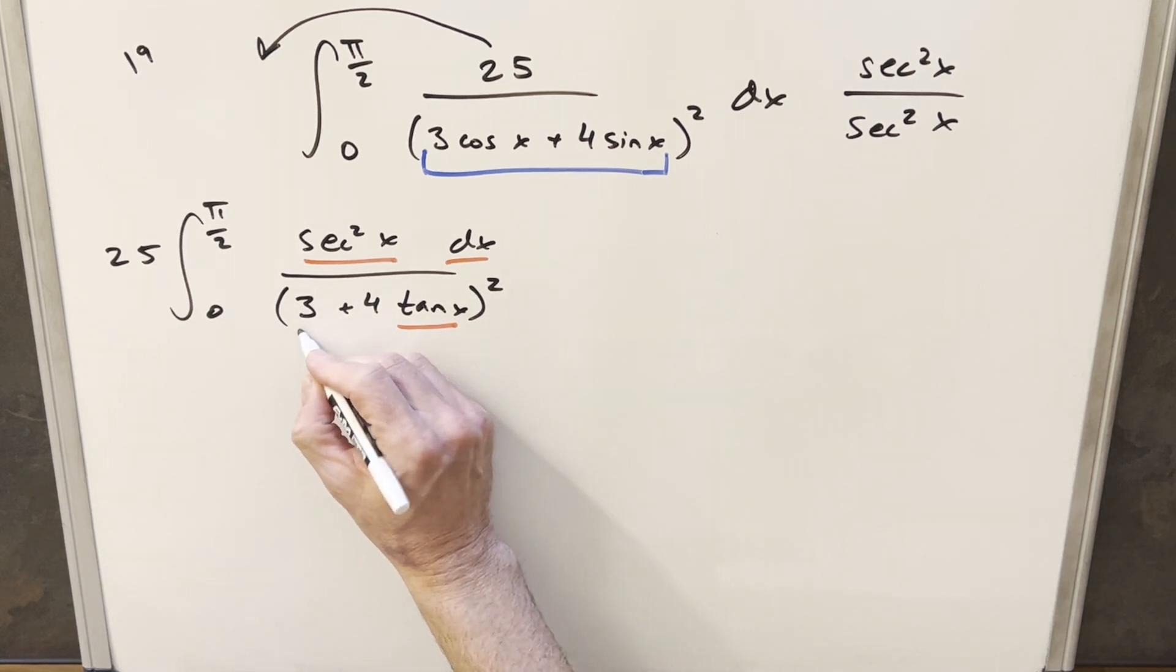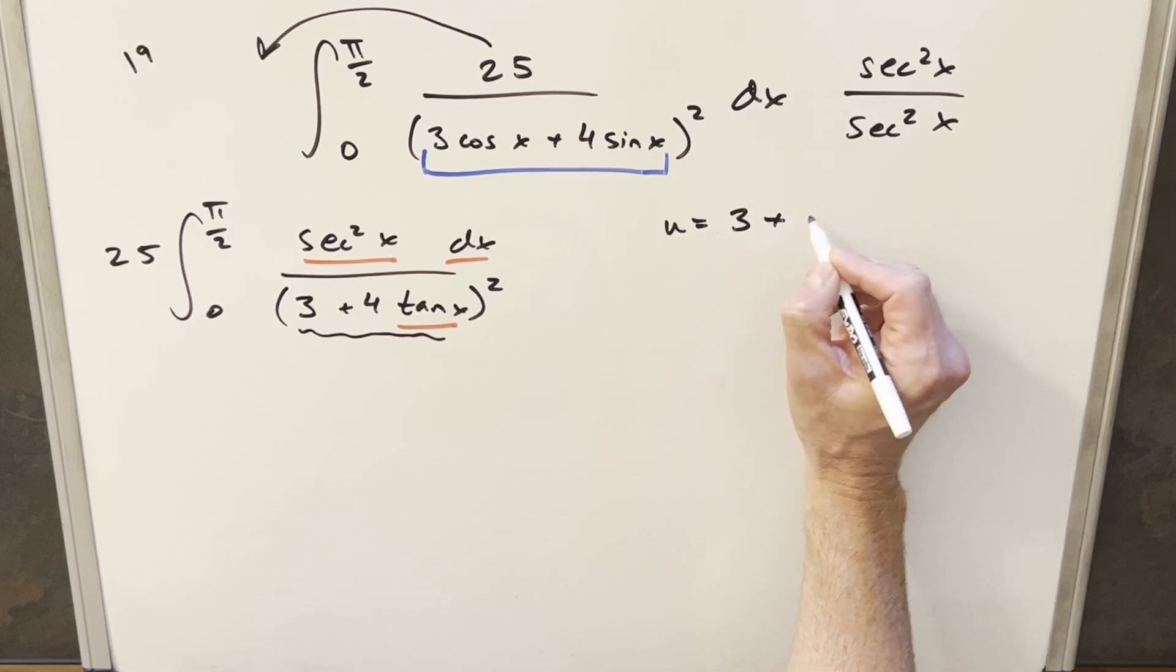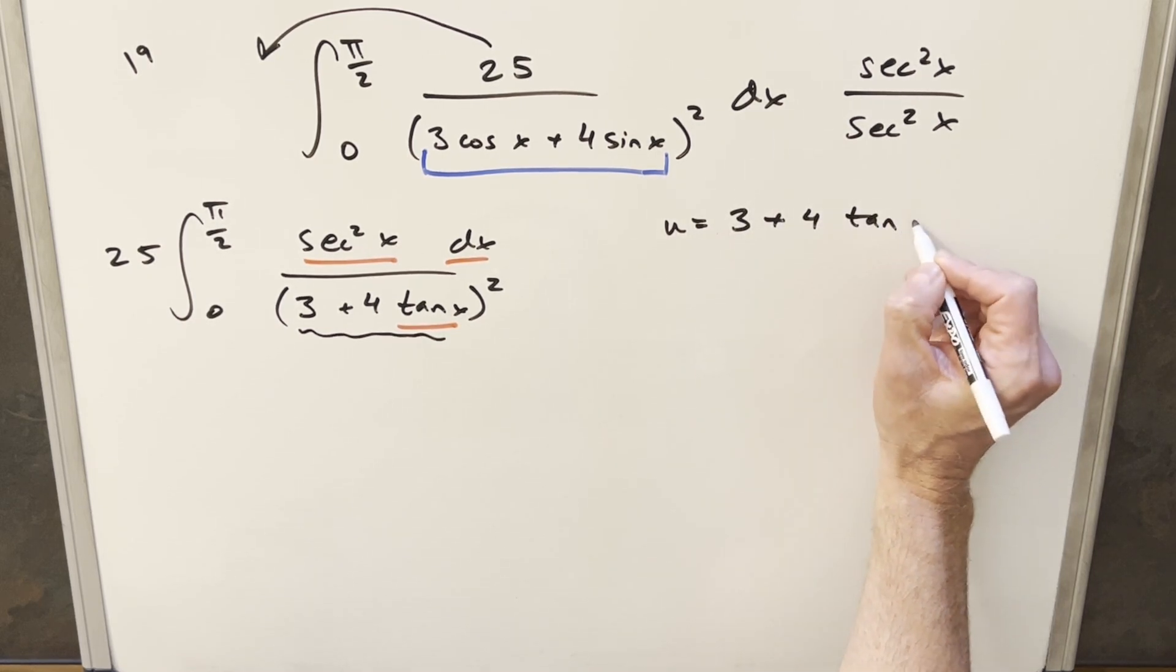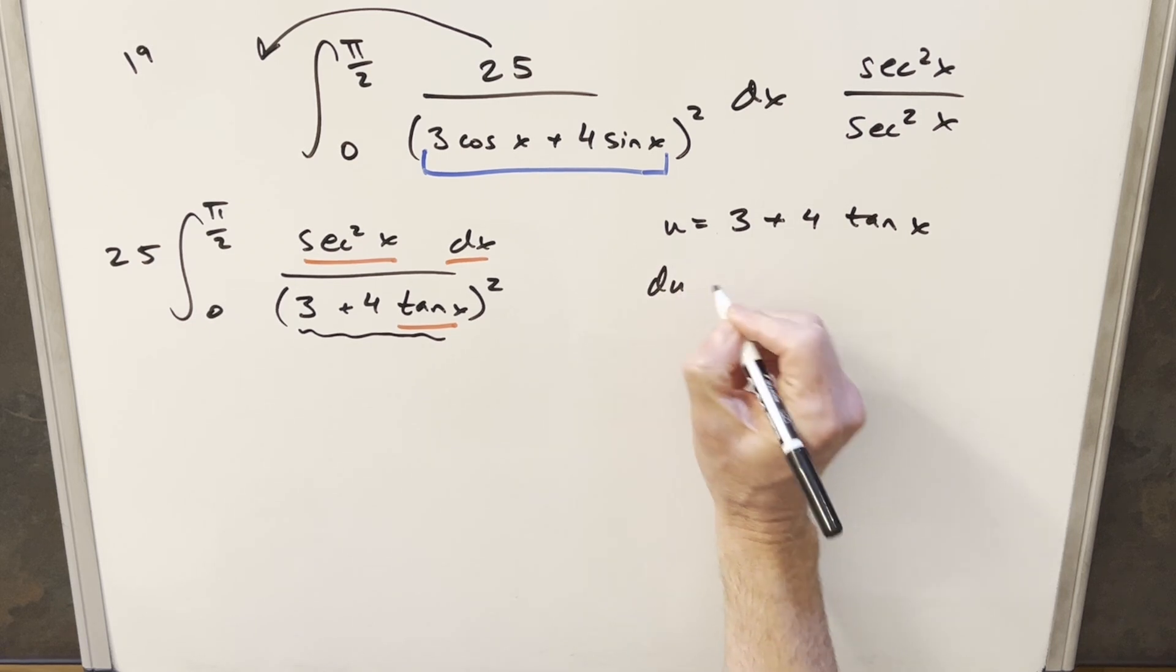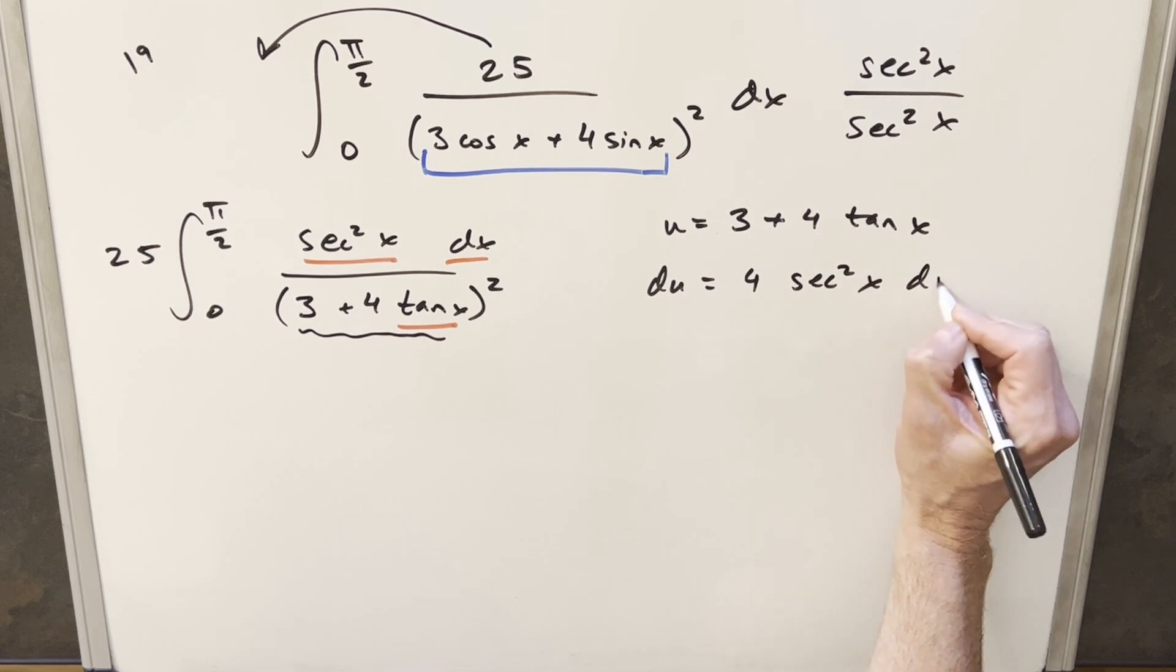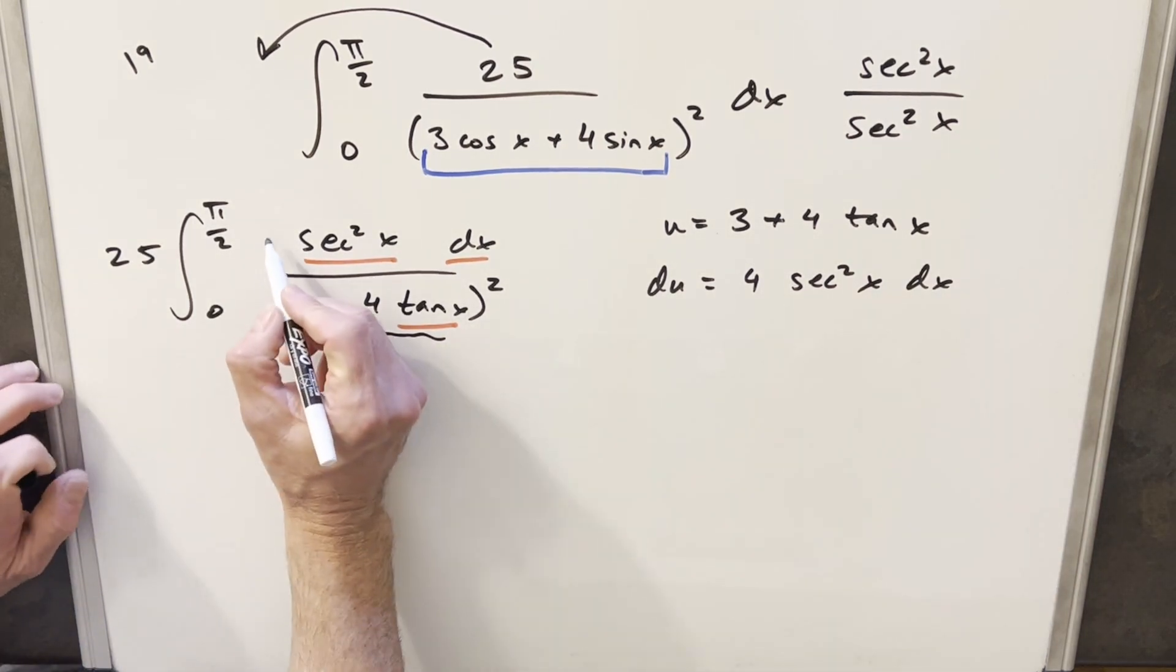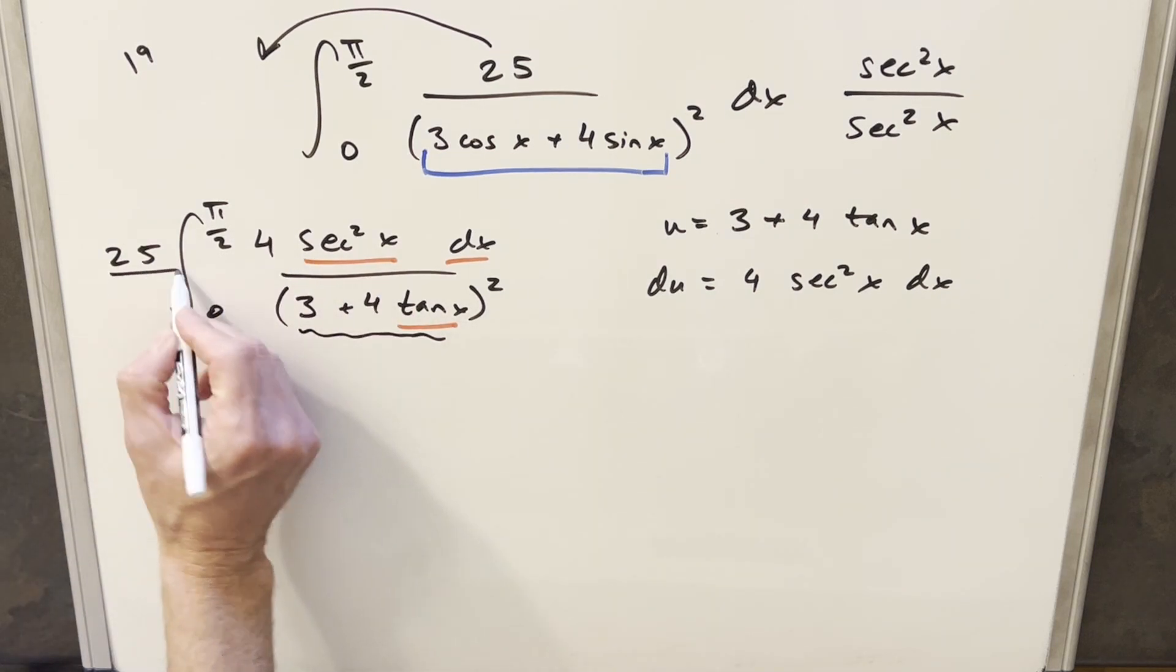So what I'll do is I'm going to make all of this my u. So we'll say u is 3 plus 4 tan x. I'll take a derivative, then du is going to be just 4 secant squared x dx. So then in order to get my numerator to match the du value, I'm just going to create a 4 right here, multiplying by 4, but we'll just need to divide by 4 so we don't change it.